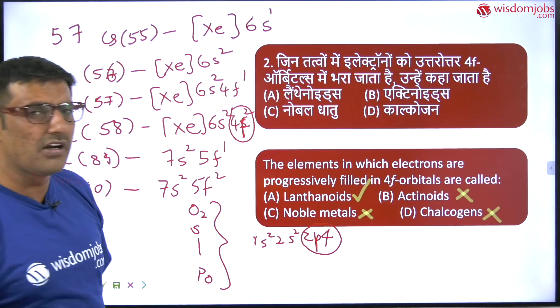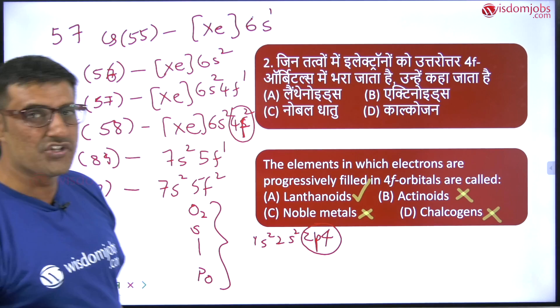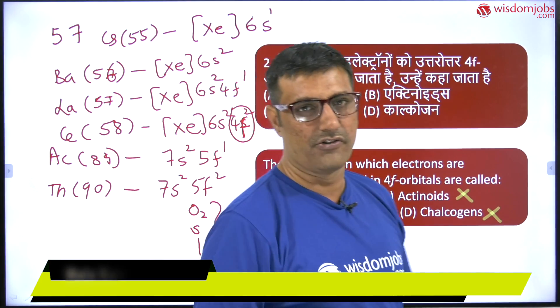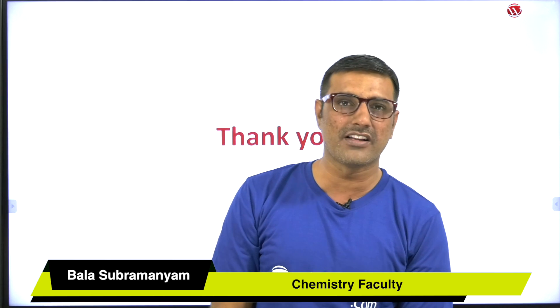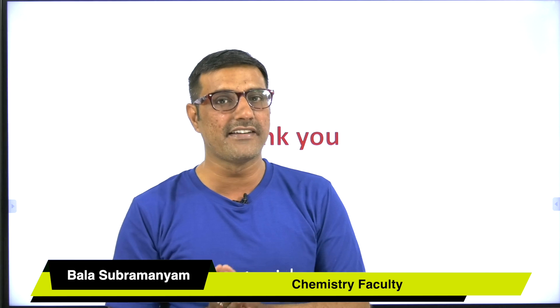So in lanthanoids, the 4f orbitals are filled by the differentiating electron or the valence electron. The correct answer is option A: lanthanoids. I hope you enjoyed this video. If you have any queries please express them in the comment box at the bottom of the video, and we will get back to you to solve your queries or doubts.